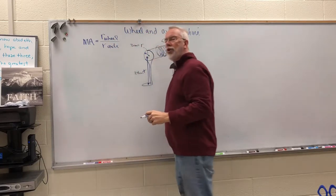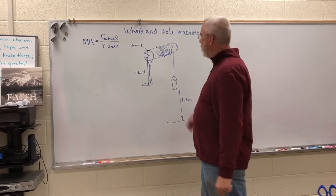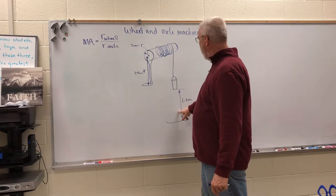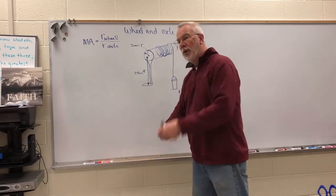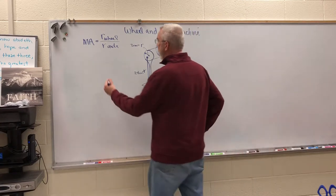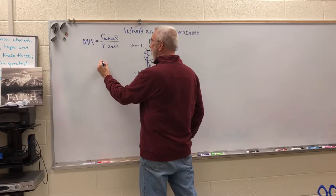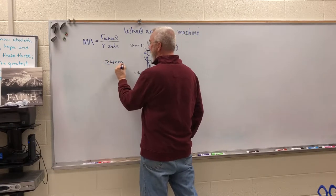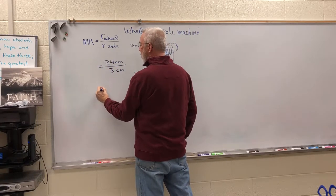The distance of 1.2 meters using the machine as opposed to having to pull it all the way up by hand. So right away you should see that the wheel's radius is the length of the handle which is 24 centimeters and the radius of the axle is 3 centimeters, so the mechanical advantage for this machine is 8.